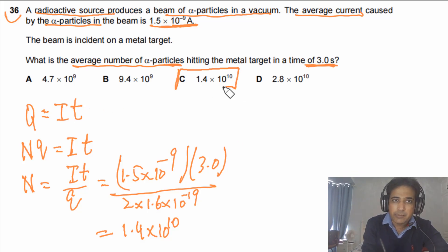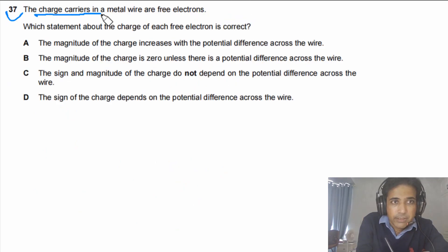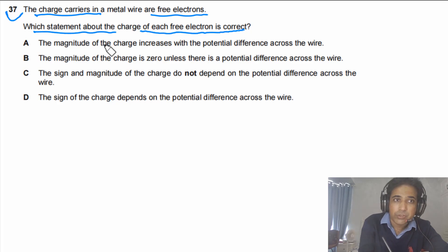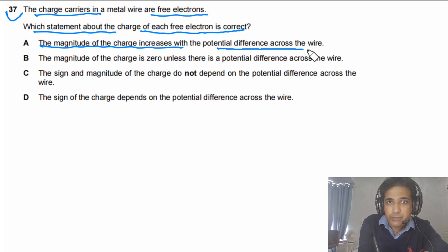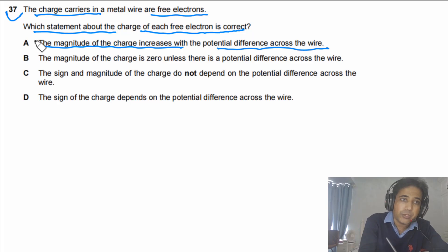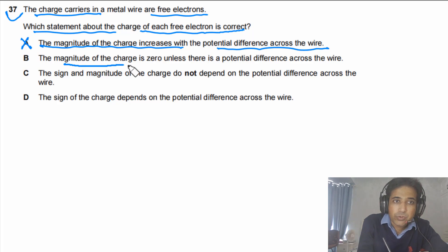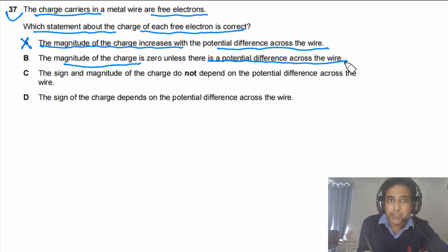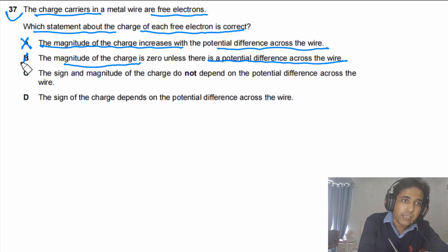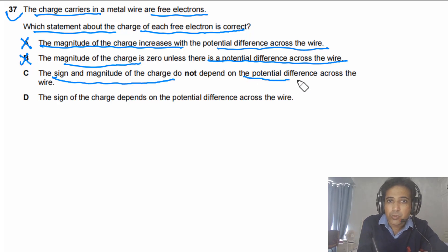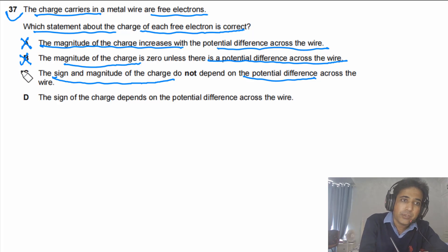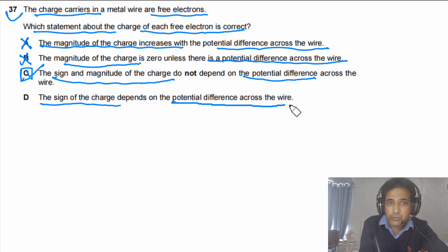Question 37: The charge carriers in a metal wire are free electrons. Which statement about the charge of each free electron is correct? The magnitude of the charge does not depend on potential difference — charge is an intrinsic property. The charge is the same whether or not there is a PD. The sign and magnitude of the charge do not depend on PD — this statement is correct. The answer is C.